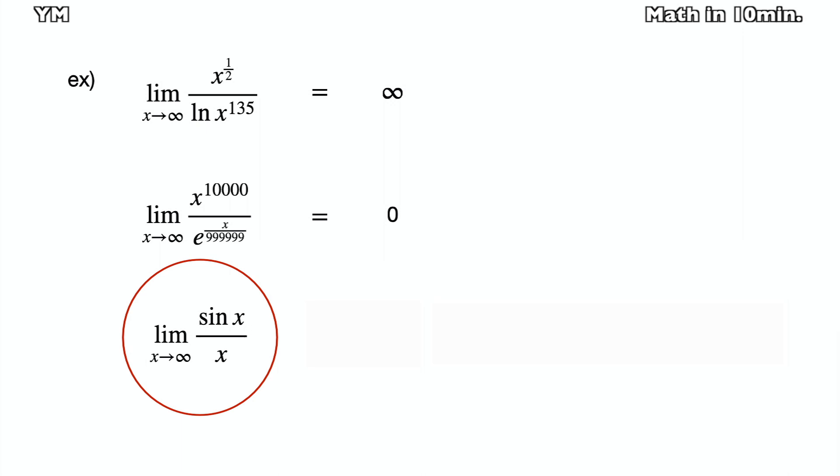The third case is somewhat different but easier. As x goes to infinity, the denominator x goes to infinity. The numerator sin x is undefined, but it must be between -1 and 1. So sin x over x must approach 0 as x goes to infinity.